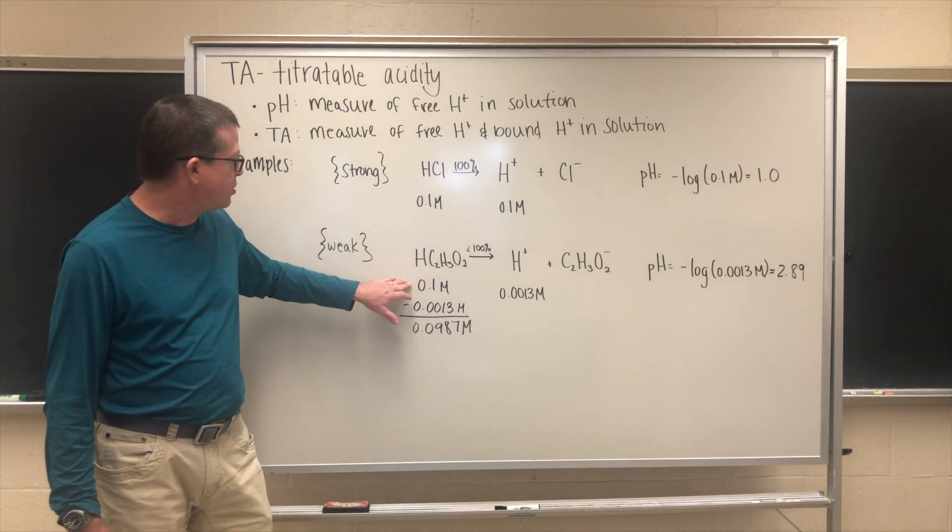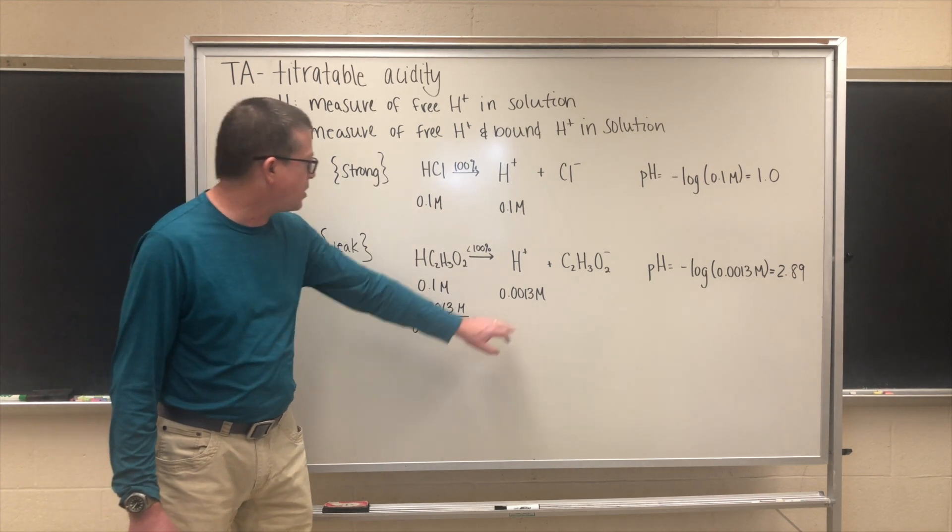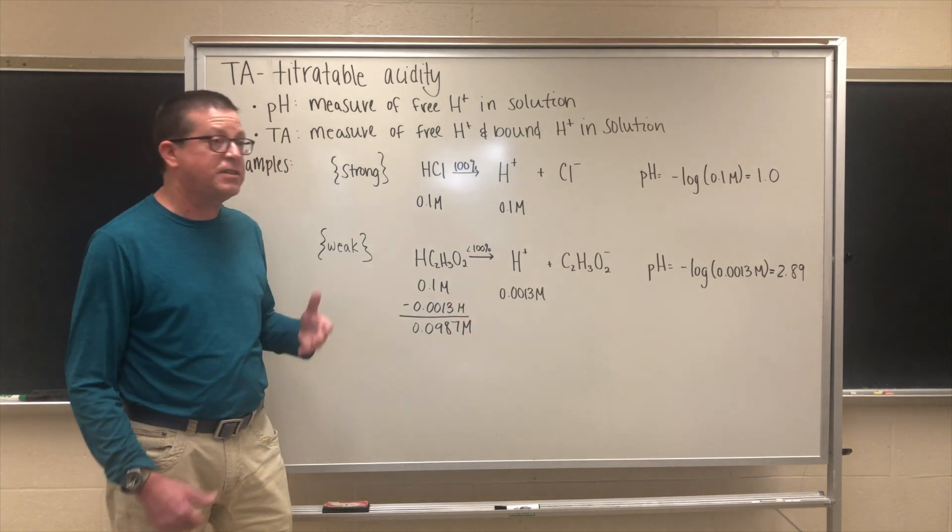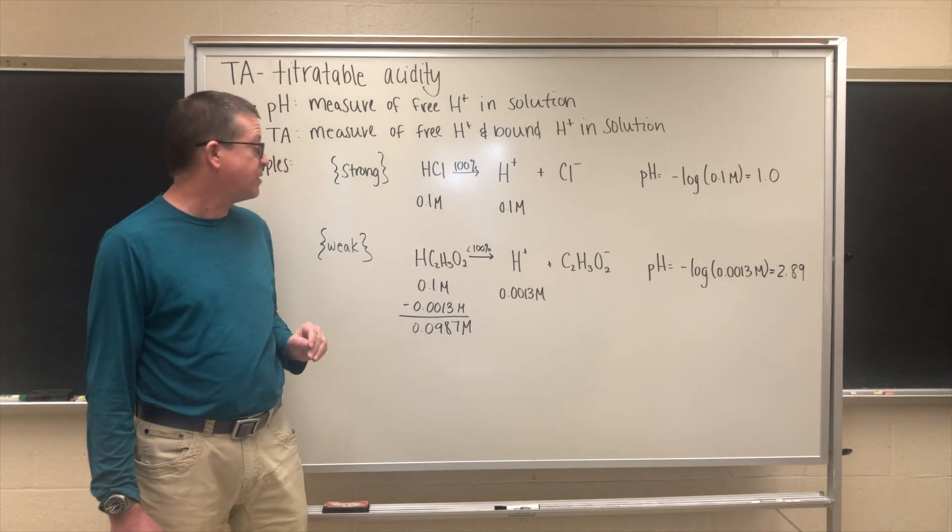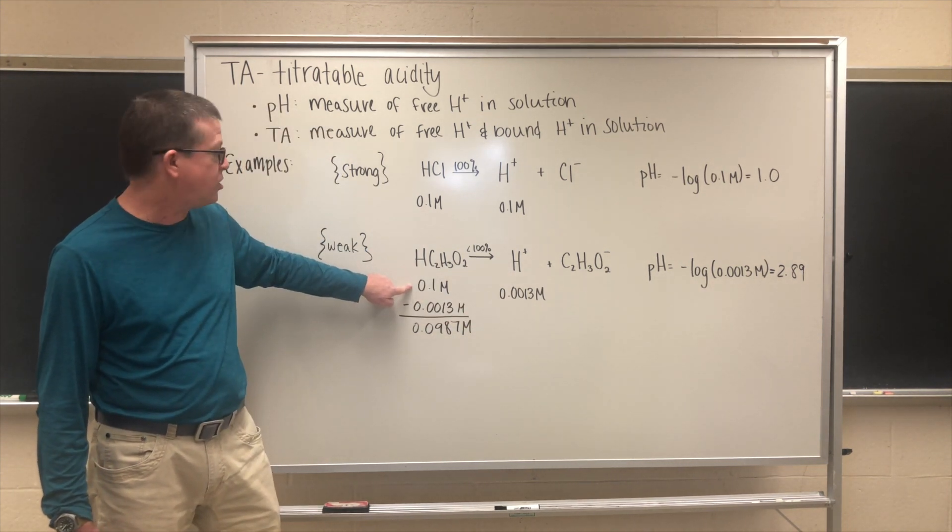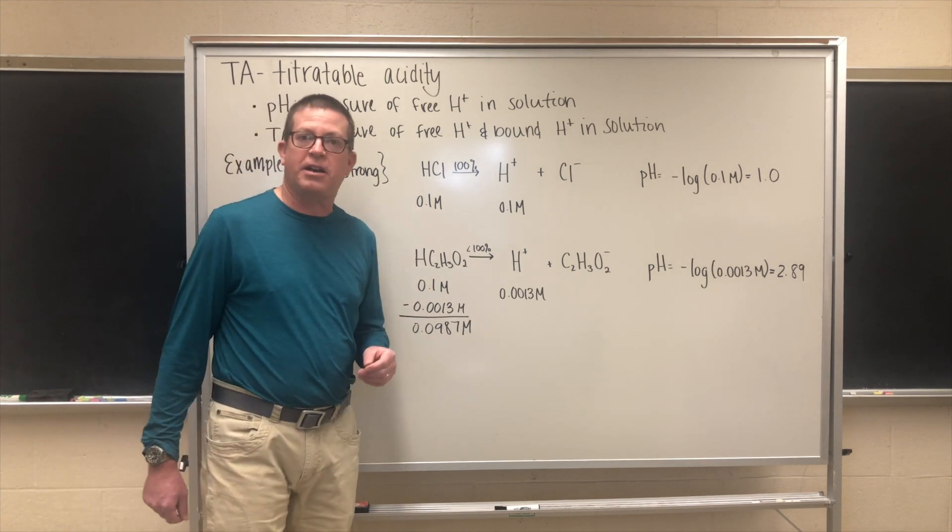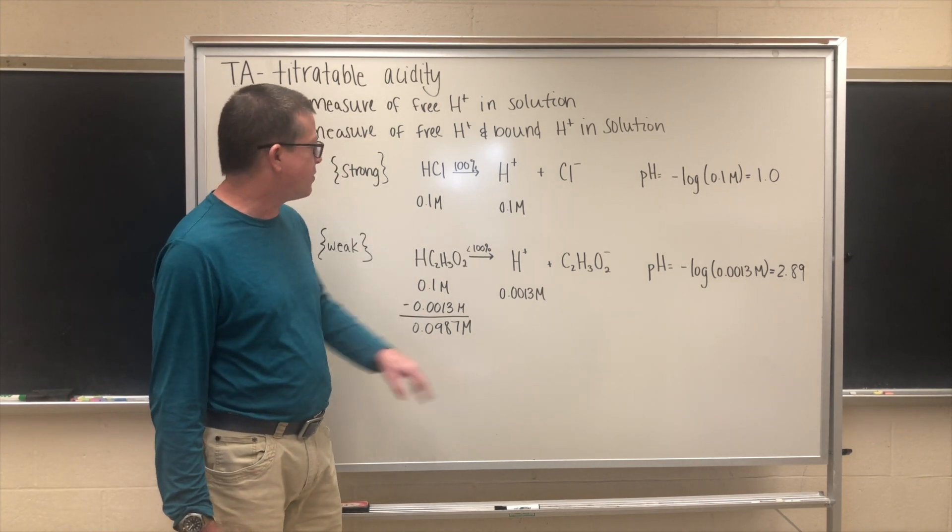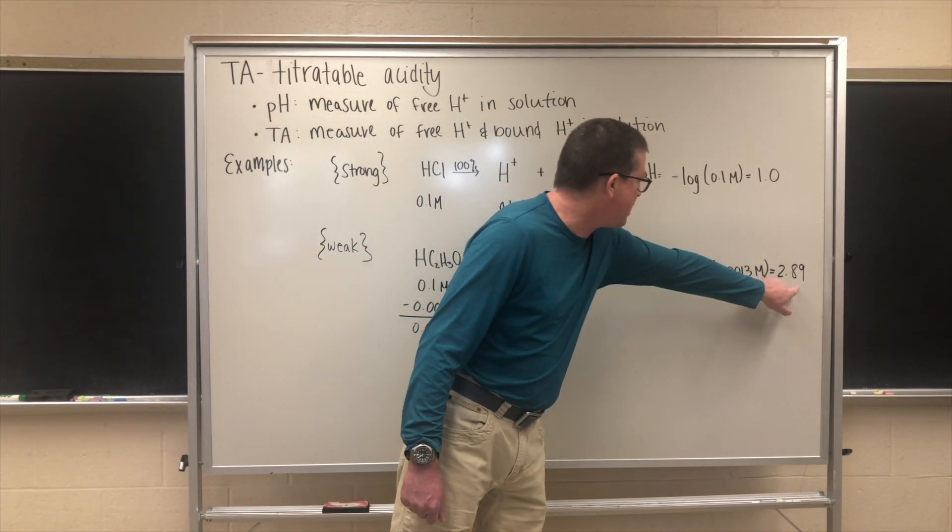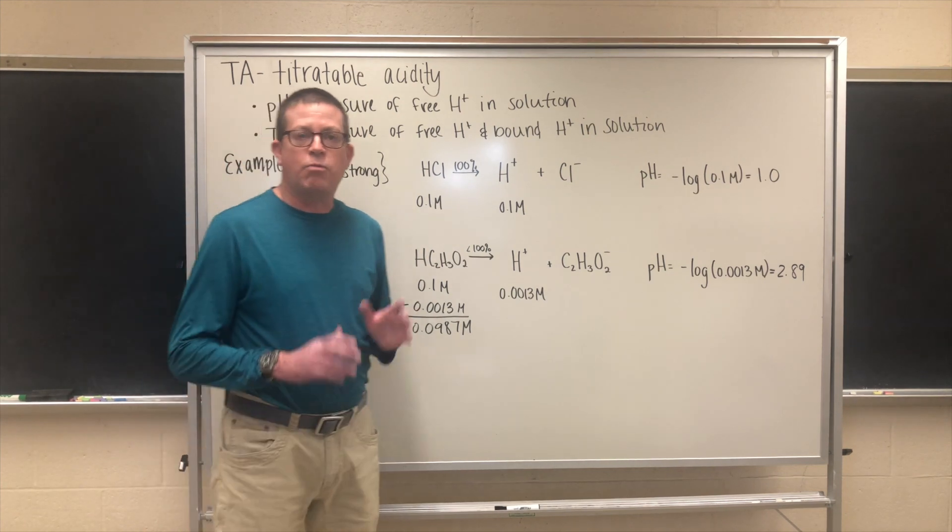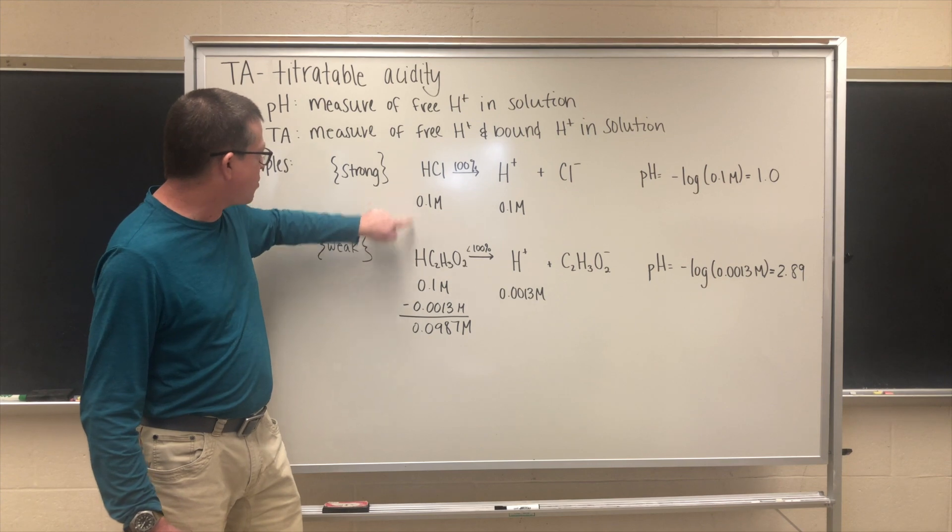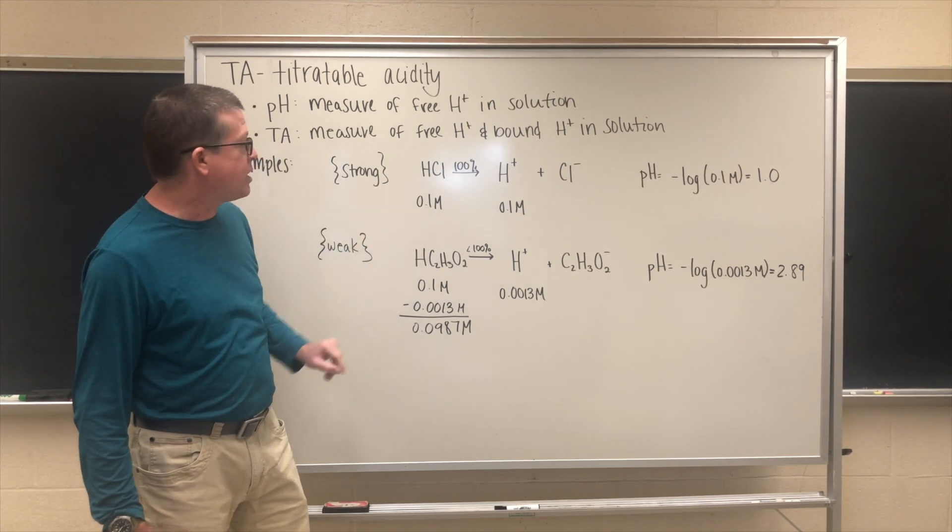I can do some simple calculations that are somewhat beyond the scope of this video to show that when a 0.1 molar solution of acetic acid dissociates in water, I'm going to make a 0.0013 molar solution of hydrogen ion. This is a very small degree of dissociation. Since pH is defined as the negative base 10 log of the hydrogen ion concentration, I can plug this number into our pH equation and get a pH of 2.89.